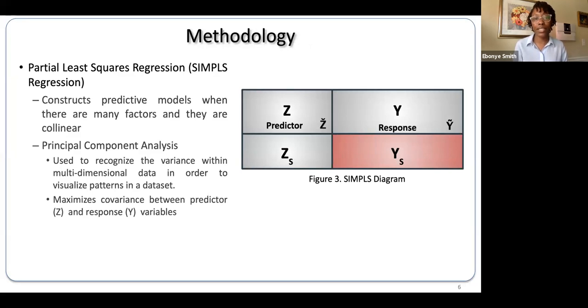The mathematical prediction method that I propose is SIMPLS regression, which is a form of partial least squares regression. First, I will collect historical data that will be divided into two parts: the predictor, or Z variable, and the response, or Y variable.